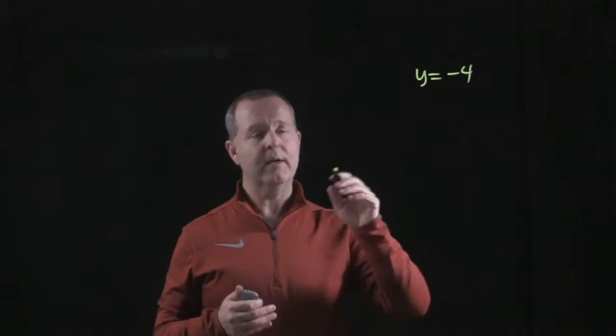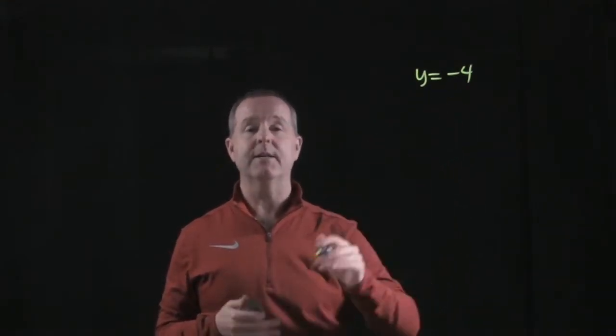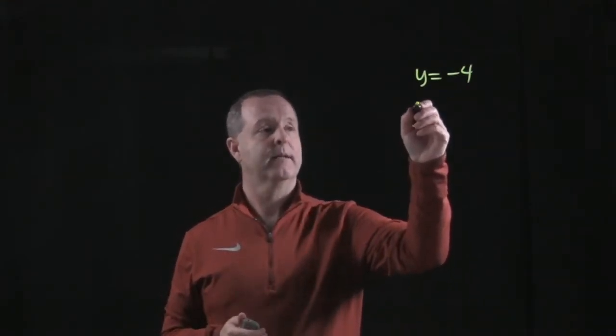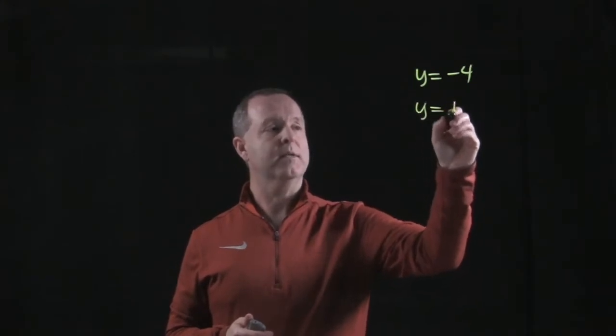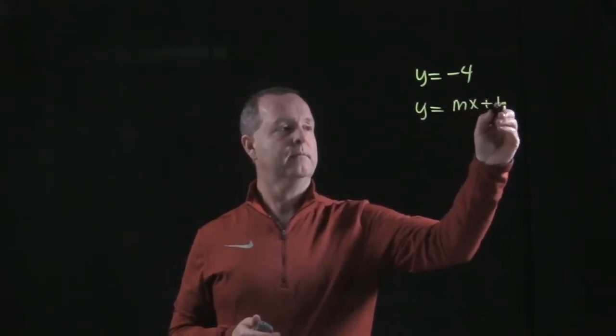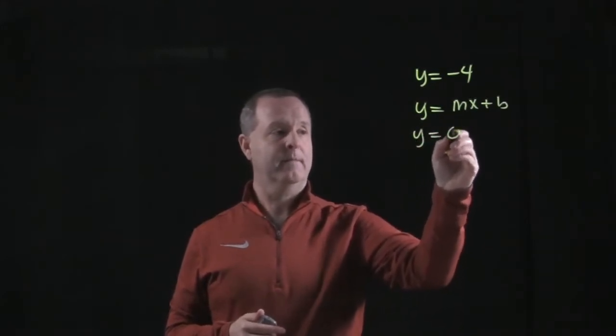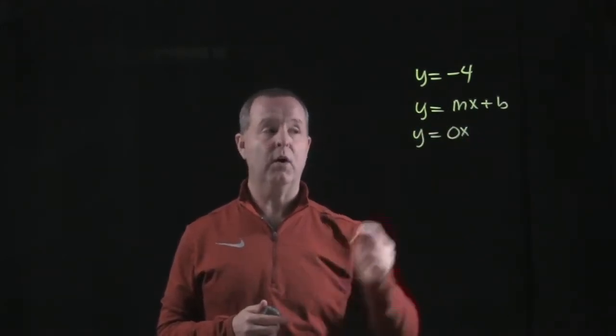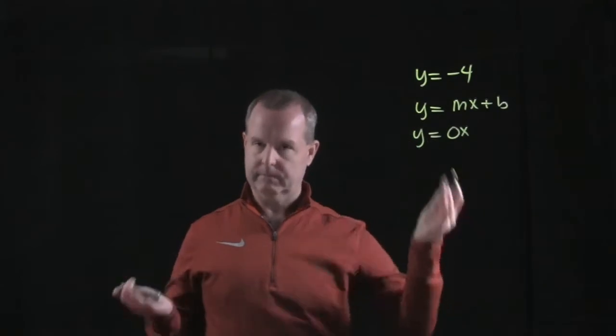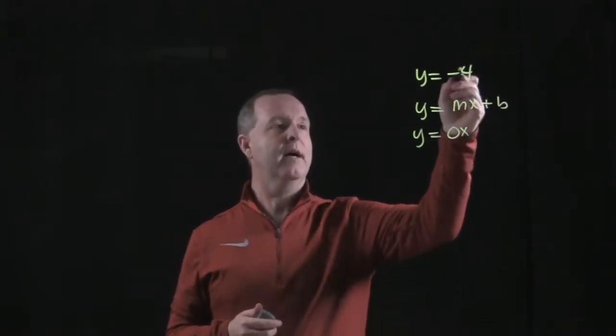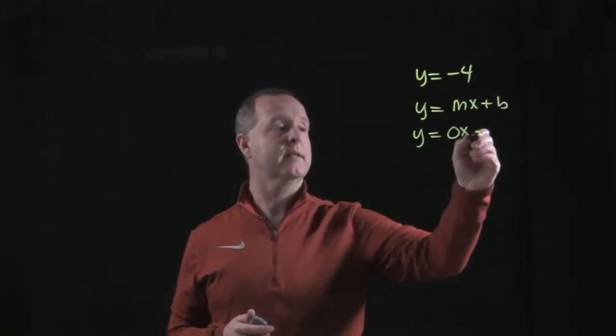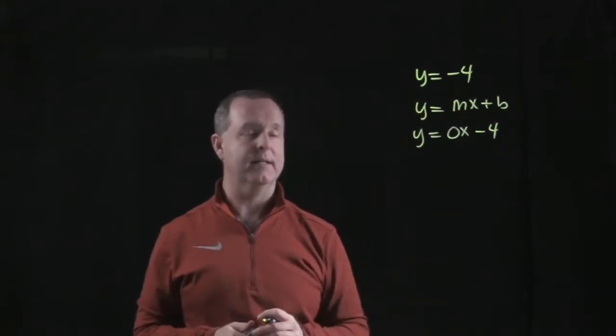Well, on one level, I can get a sense of putting it into our slope-intercept form of the line. Remember that equals y equals mx plus b. There's no x value here, so my slope would be zero because zero times x disappears. I have a value, a constant, so my b represents negative 4.